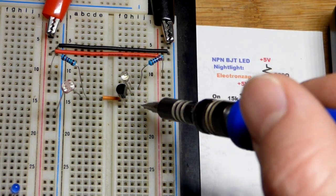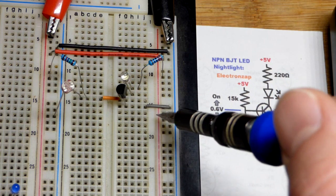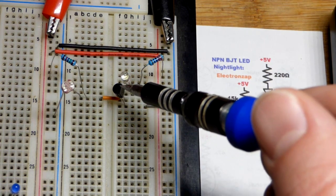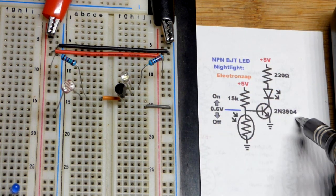the long lead, the anode on top, the shorter lead, the cathode, if you didn't trim them, towards the bottom. The NPN bipolar junction transistor there, 2N3904.